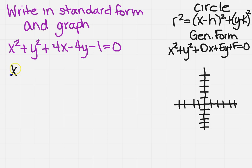So this is going to become x squared plus 4x plus y squared minus 4y minus 1 equals 0.